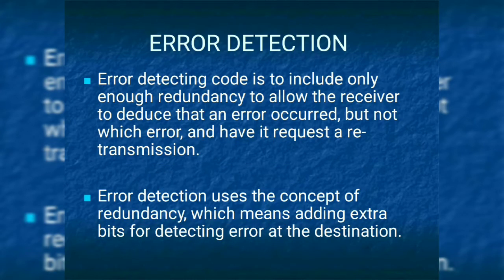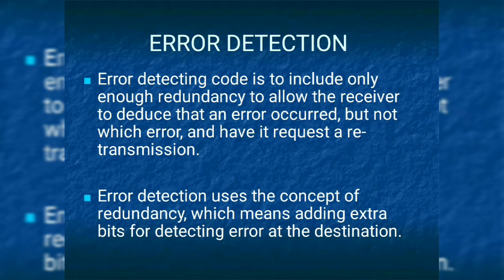Next, error detection. In error detection, it includes the concept of redundancy. While transmitting the data units to the receiver side, you are going to add extra bits — extra redundant bits — appended with the data units. If an error is found at the receiver side, that error should be detected with the help of a redundant bit instead of re-transmitting the data bits once again. Redundancy means adding the extra bits to the data unit.